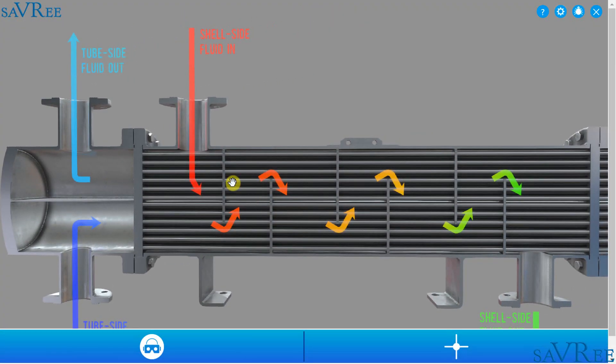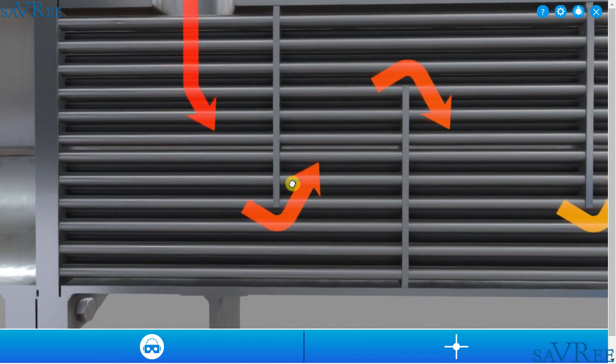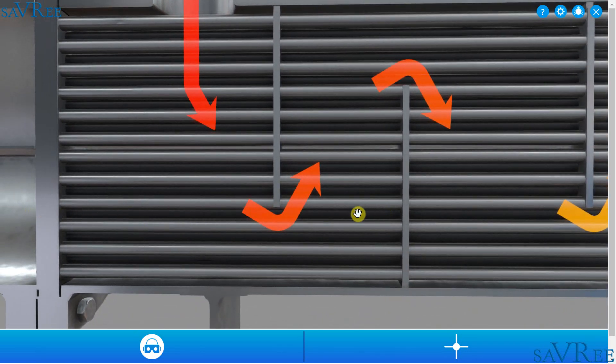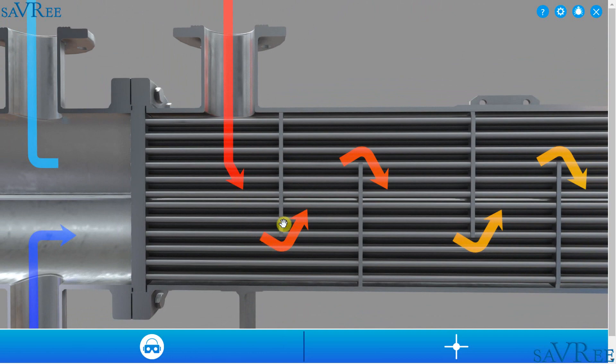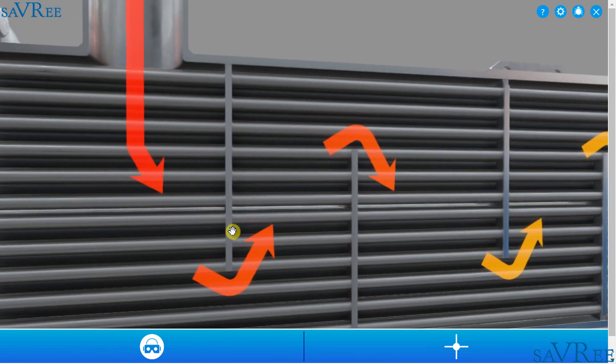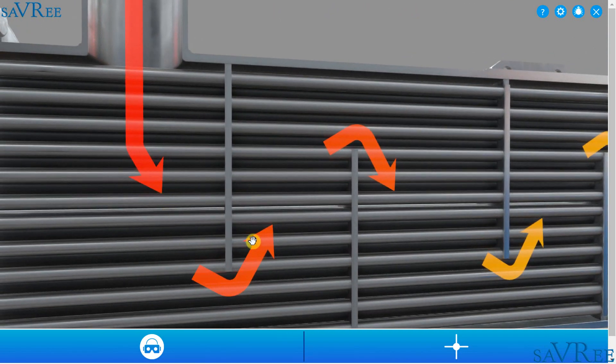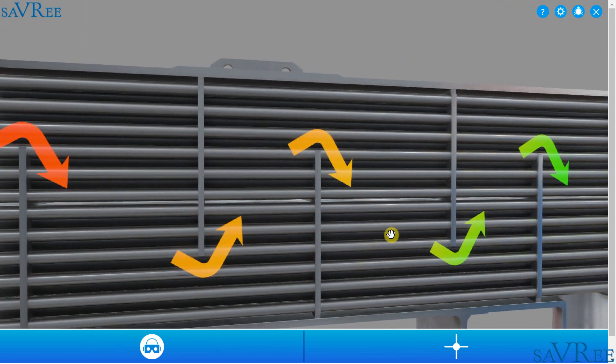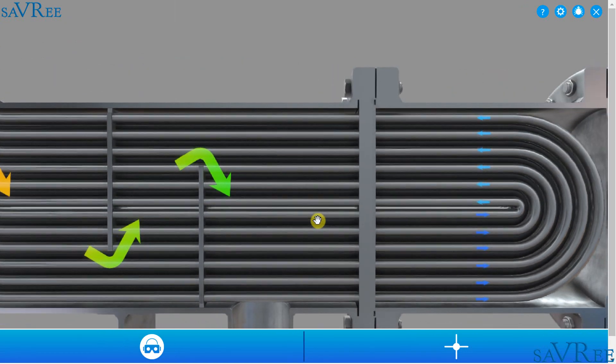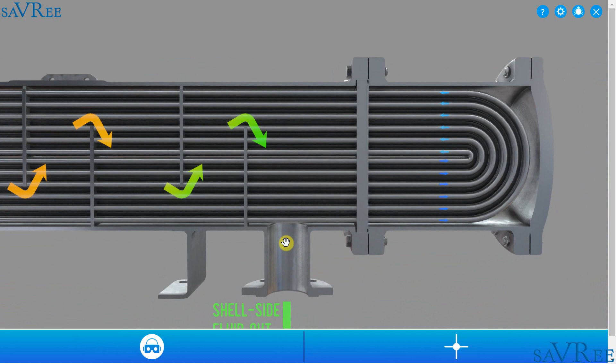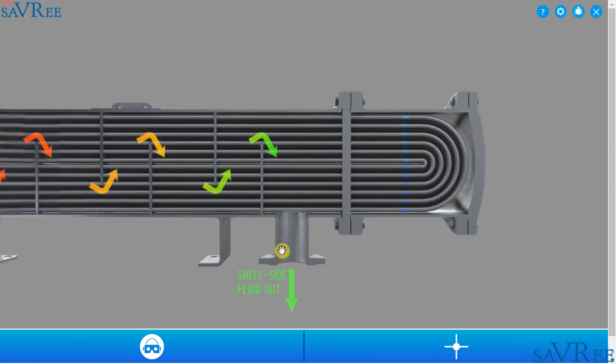Let's have a look at the fluid that comes in at the top, the shell side fluid in. Now it does not, unlike the tubular flow which flows relatively direct, the fluid that is flowing in on the shell side is going to flow around a series of baffle plates. It's going to come around here and be forced to turn, it's going to turn again, it's going to turn again and it's going to keep doing that all the way along and then it is going to exit at the bottom of the heat exchanger.